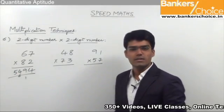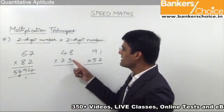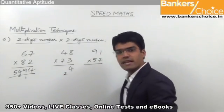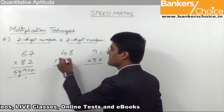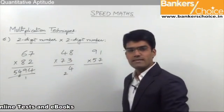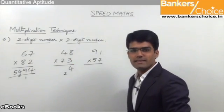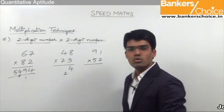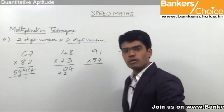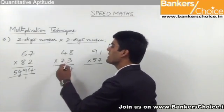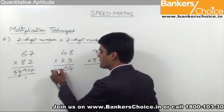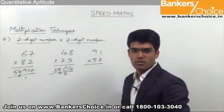Moving on to the next one: 48 into 73. The first step is 8 into 3, which is 24. So 4 in the answer and 2 gets carried forward. Second step is cross multiplication: 4 into 3 is 12, and 7 into 8 is 56. 56 plus 12 is 68. 68 plus 2 is 70. So 0 in the answer and 7 gets carried forward. The last step: 4 into 7 is 28. 28 plus 7 is 35. So the final answer is 3504.